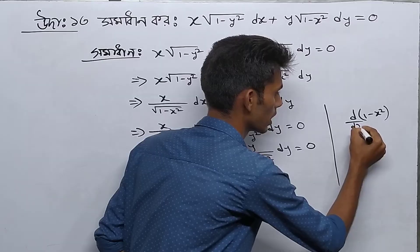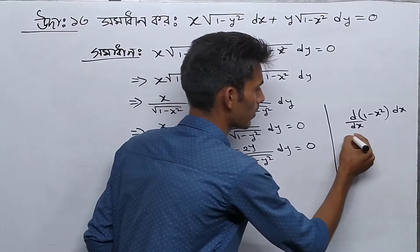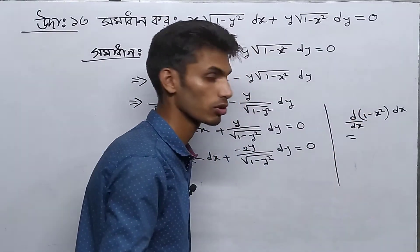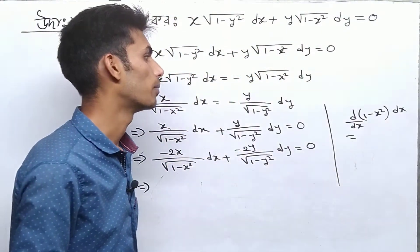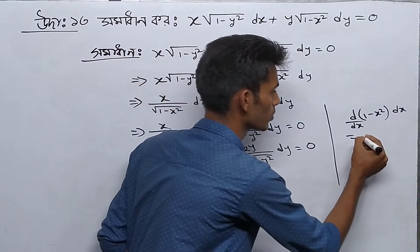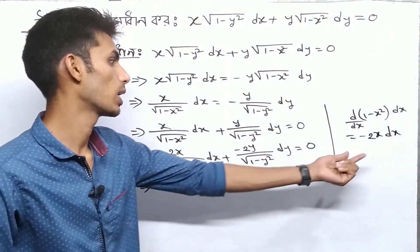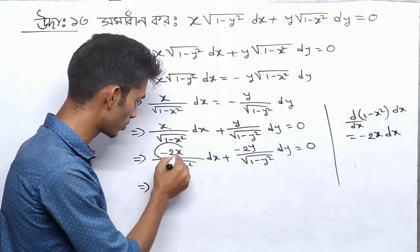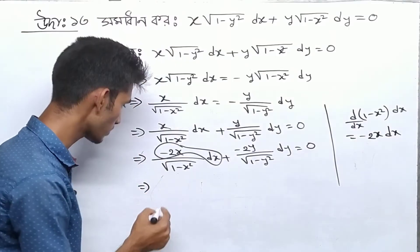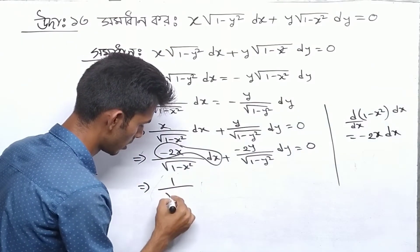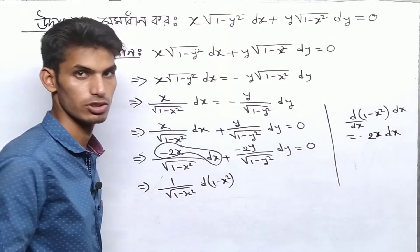So we add a side note: dx, then we have x times 1 minus x. We write d(1-x²). Then we write 1 over root(1-x²) times d(1-x²).